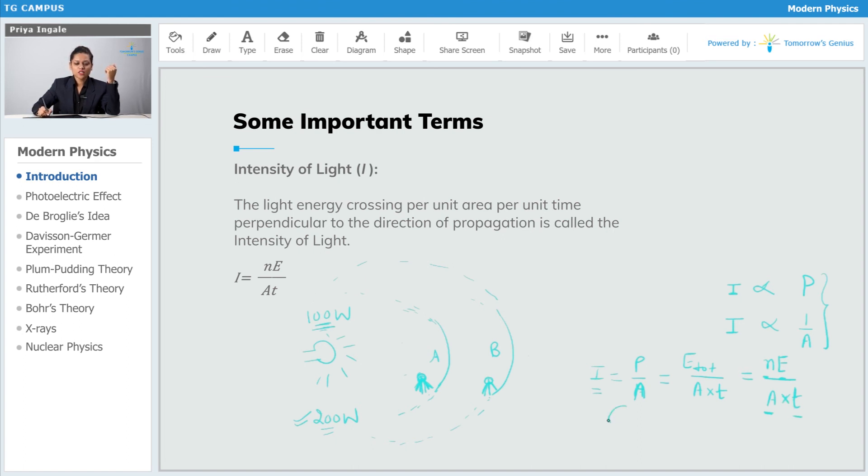Now, the unit of intensity is very simple. You can derive it from this formula, power by area. So, watt per meter squared is the unit of intensity.